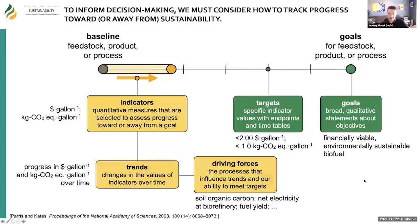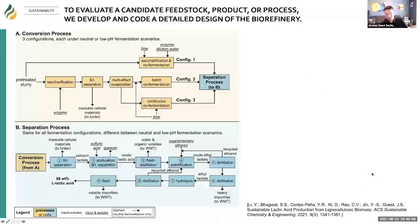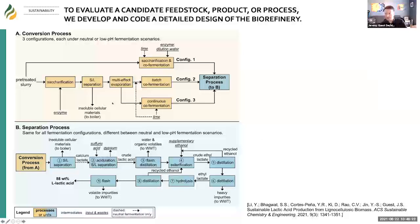Those are the things we try to track when we look at a candidate product, process, or feedstock. To give an example — a lactic acid biorefinery. I don't want you to focus on any of the boxes; I just want to walk through the process we use to evaluate. In this case, the example is lactic acid production from lignocellulosic biomass. One of the first things we do is sit down with folks in conversion and think through what all the unit operations would have to be — if I were to build a biorefinery today, what are all the things I'd have to buy and connect to actually produce our final product, in this case lactic acid for market.